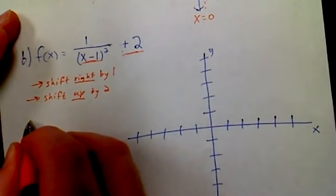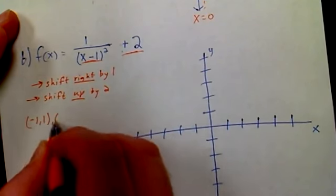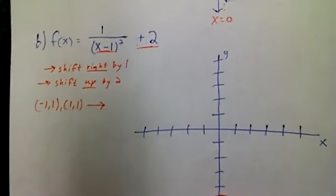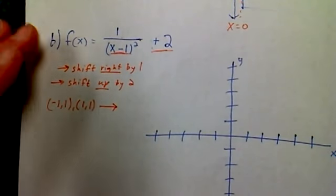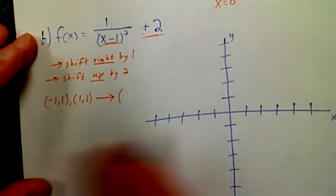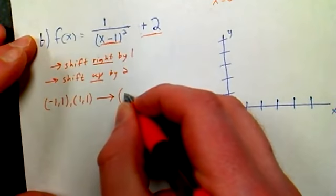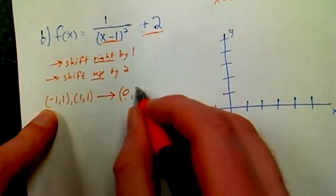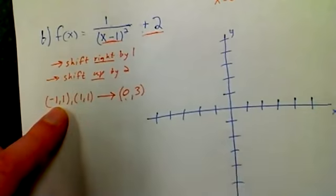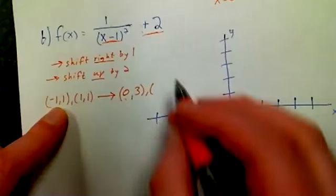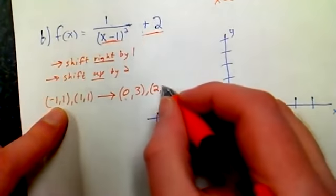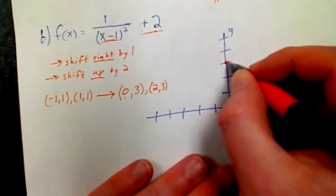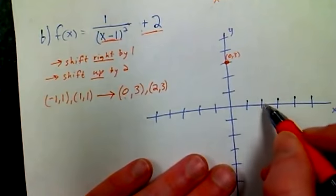Normally in one over x squared, I have these two points: negative one, one and one, one, and then those same horizontal and vertical asymptotes. I want to know after I do these two shifts, where are these going to be. If I shift right by one, I'm going to move the x over to the right by one. So this will be zero for the x value, negative one to zero, that's right by one. And I went up by two, so this is now a three, one to three. The one, one I shift to the right one, that's two. I go up by two, that's three. So I have zero, three and I have two, three.